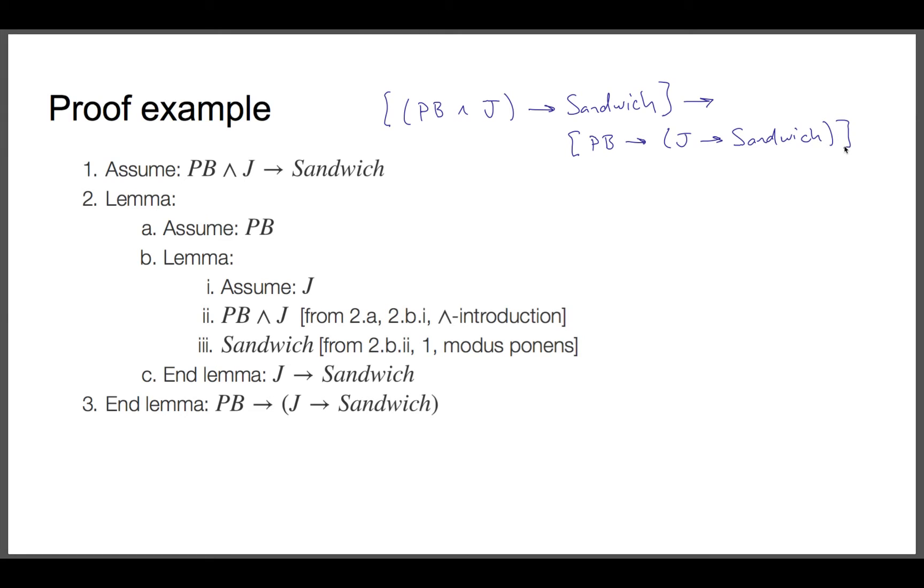And the way we can do that, the way we can figure out what this proof shows, is we take a look at the assumptions. There's only one at the top level of this proof, and we take a look at the last conclusion that we drew.